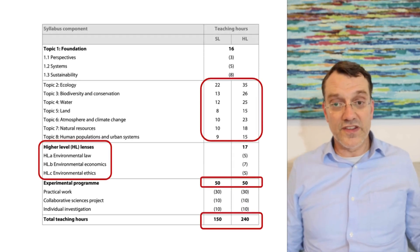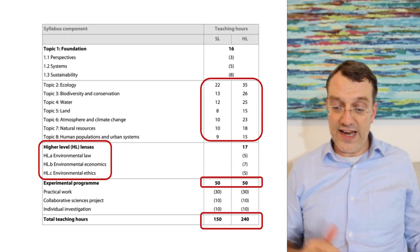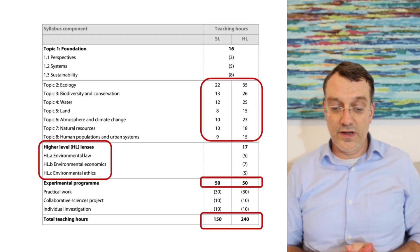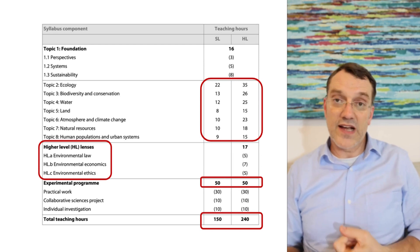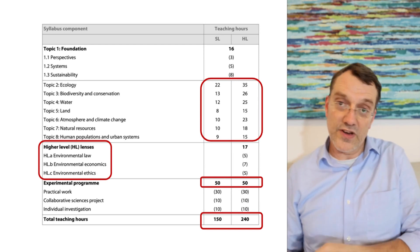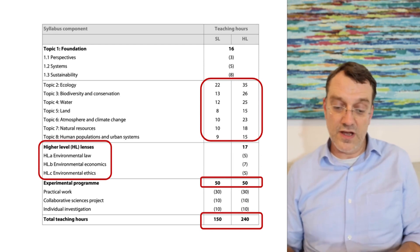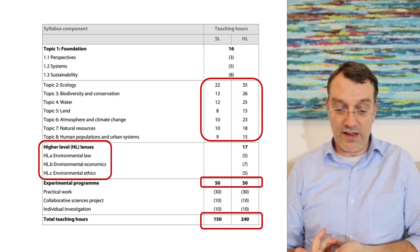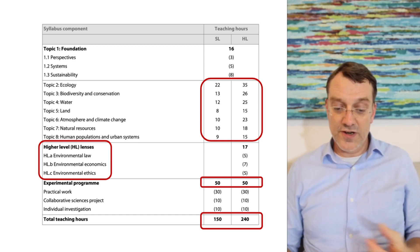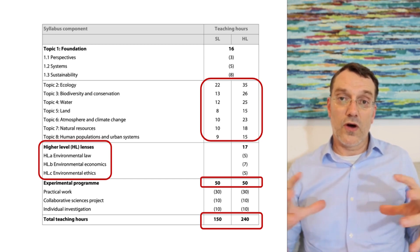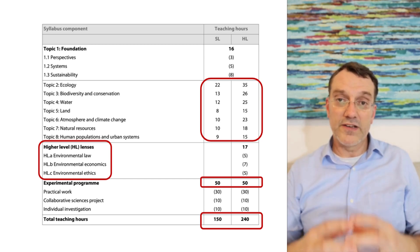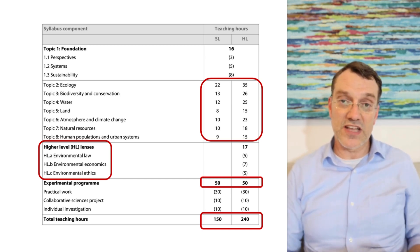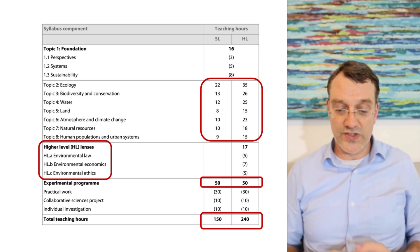Beginning with Topic 2, there are differences in the syllabus for HL and SL students. Topic 2 is ecology, Topic 3 is biodiversity and conservation, Topic 4 is water, Topic 5 is land, and Topic 6 is atmosphere and climate change. All of those are very similar, even in the same sequence as they were in the old syllabus.